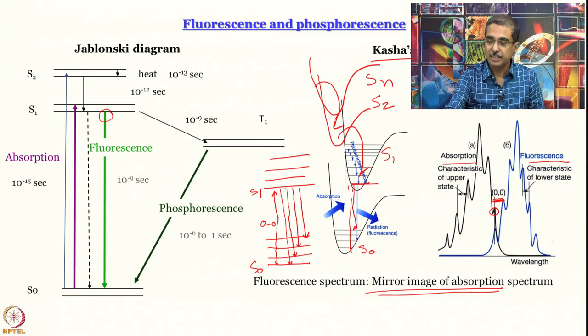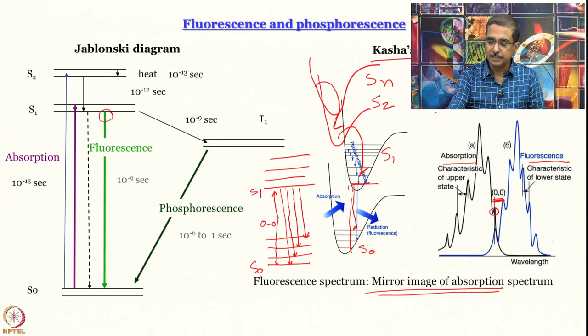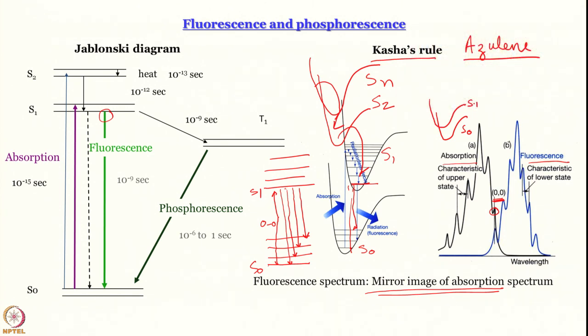For azulene, the S0 and S1 energy levels actually have a crossover — S1 is non-emissive, and S2 is at a slightly higher energy. So the fluorescence originates from S2. That is why for azulene it is not a mirror image; rather the fluorescence spectrum of azulene occurs at a higher energy than the lowest energy electronic transition in the absorption spectrum. This is called the azulene anomaly. In recent times this explanation has been debated and other explanations provided, but this is still the explanation usually given for the azulene anomaly.